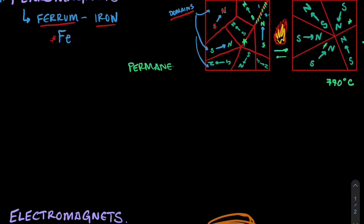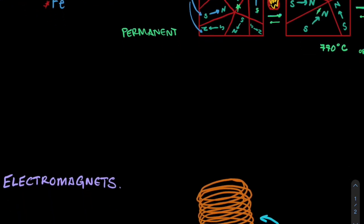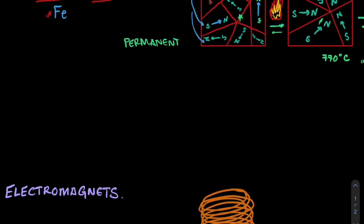And these ferromagnets will keep their permanent magnetic field as long as those domains are aligned. But what was discovered is that the source of all magnetism really is current, and I'm going to write that down just because it's so important, such a crucial concept to understanding magnetism, that current is the source of all magnetism.